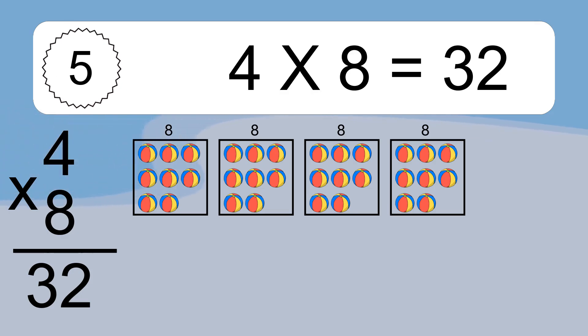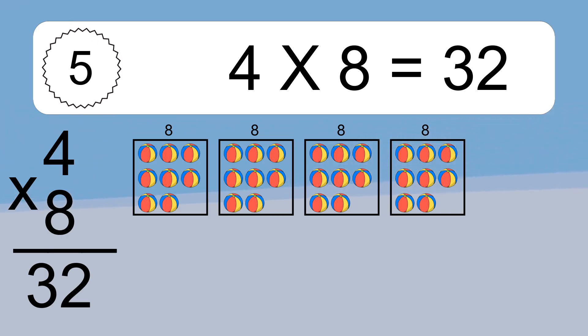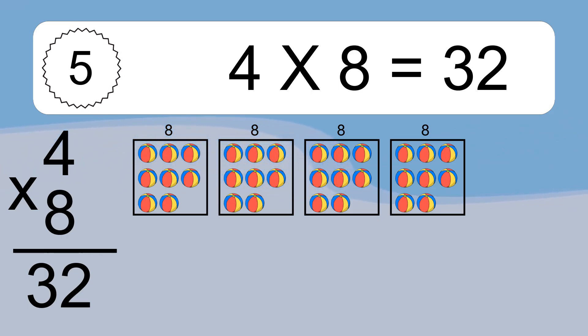4 times 8 equals what? We have 4 boxes, and each box has 8 colorful balls inside. If you count all the balls in all the boxes together, you will have 4 times 8 balls. This equals 32 balls.